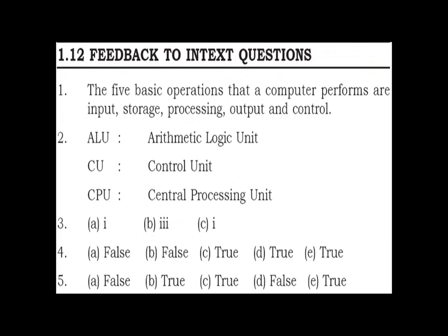Section 1.12 — Feedback to index questions. Answer 1: The five basic operations that a computer performs are: Input, Storage, Processing, Output, and Control. Answer 2: ALU stands for Arithmetic Logic Unit; CU stands for Control Unit; CPU stands for Central Processing Unit.